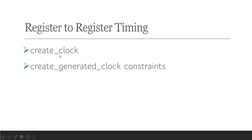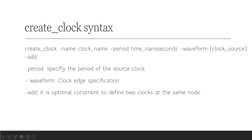The purpose of this video is to discuss the create clock constraint syntax, which is used to define a clock, and we will see what inputs we provide while defining a clock. This constraint should be written in a constraint file. There are various file extensions used for constraint files — for example .sdc or .xdc — but this constraint must be written in a constraint file.